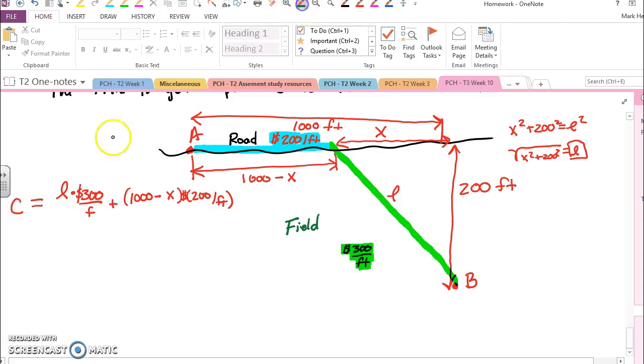So the only thing to do now is to replace this length with what it represents in terms of x, which is the square root of x squared plus 200 squared. So we're going to graph this on our calculator.